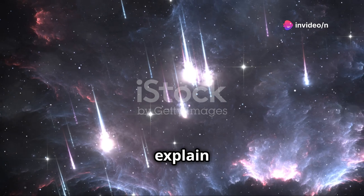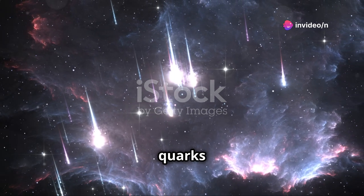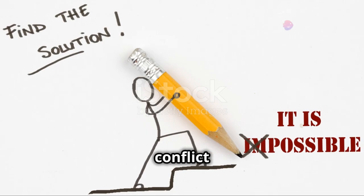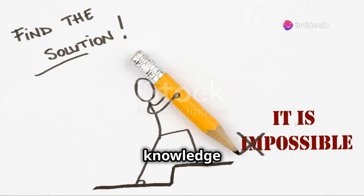A complete theory should explain everything, from quarks to quasars. The conflict between general relativity and quantum mechanics suggests we're missing something crucial. Resolving this conflict could unlock new realms of knowledge and technology.